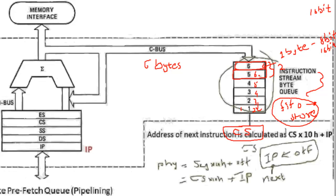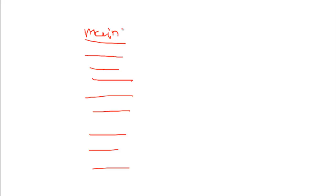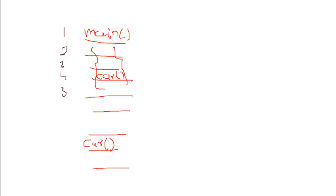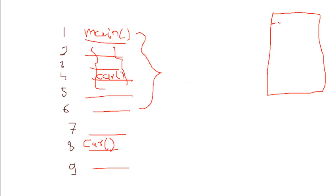Pipelining fails when there is a function call. Say that this is a set of instructions in the main function located here. I have certain code, and on a particular line I made a call to a function called Car. The Car function is located somewhere else — instructions one, two, three, four, five, and six are in the main function.